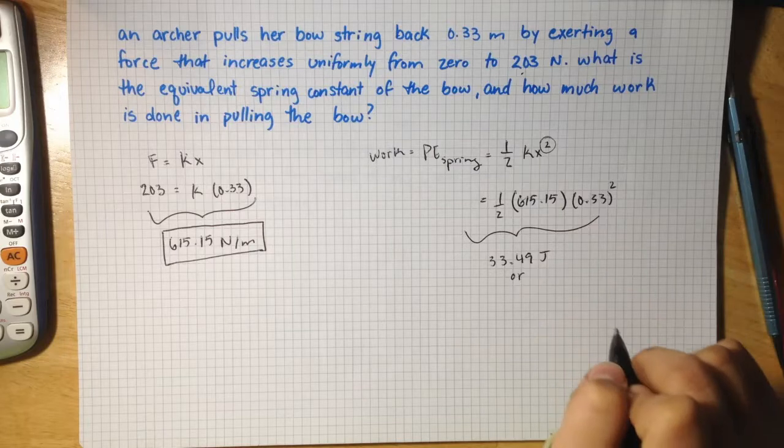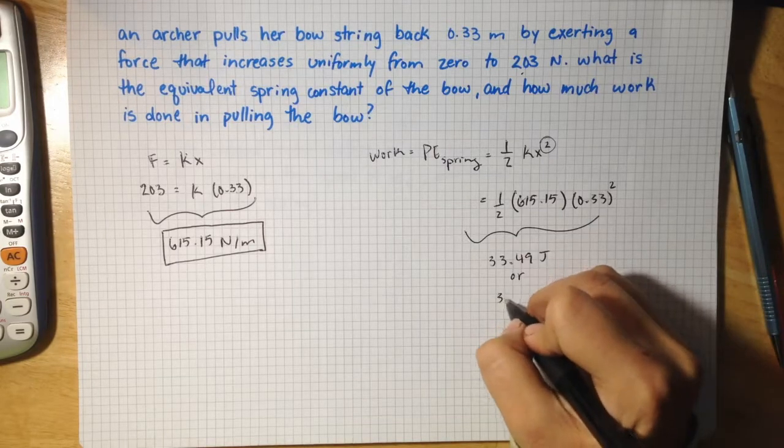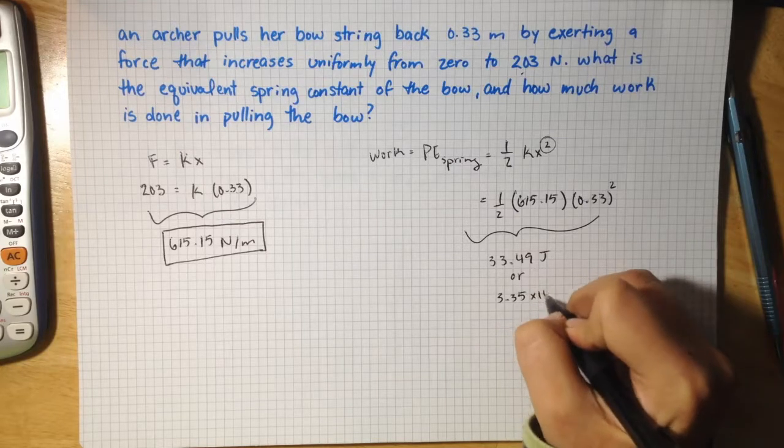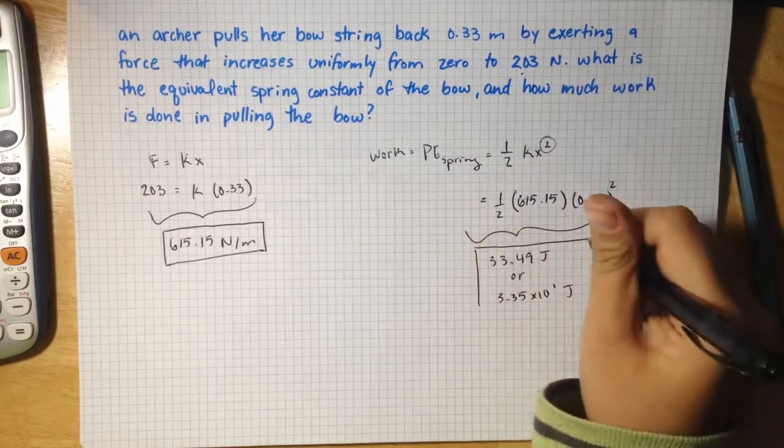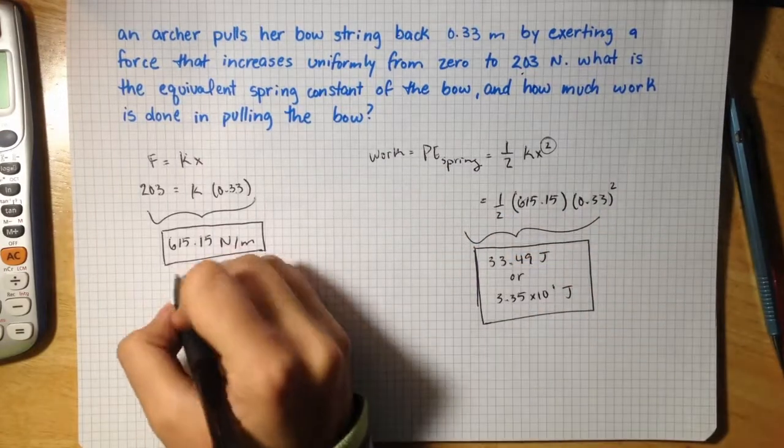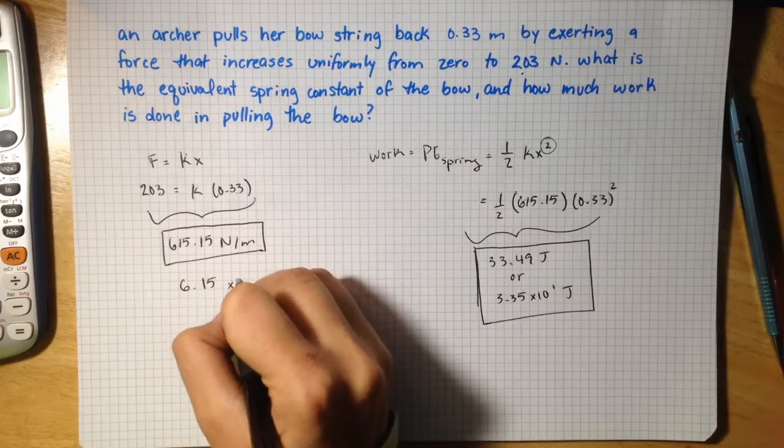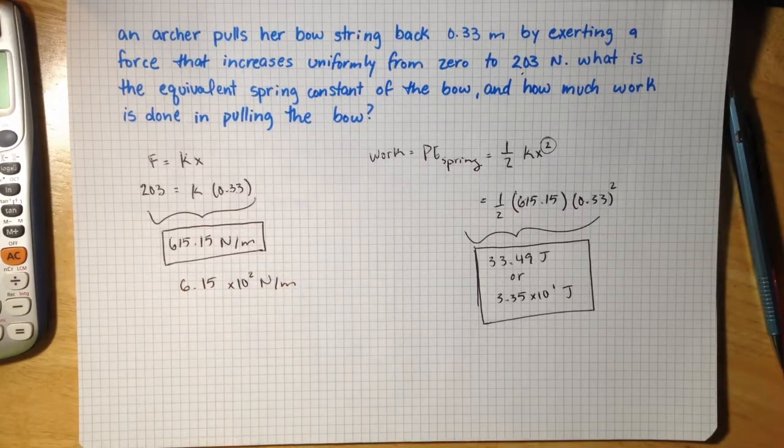Or if you wanted to write this in scientific notation, 3.35 times 10 to the 1 joules. And if you wanted to write the spring constant in scientific notation it would be 6.15 times 10 to the 2nd power newtons per meter.